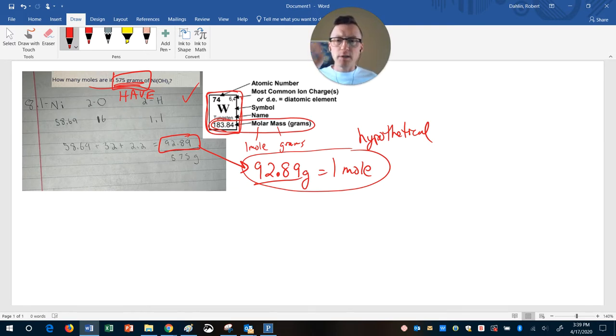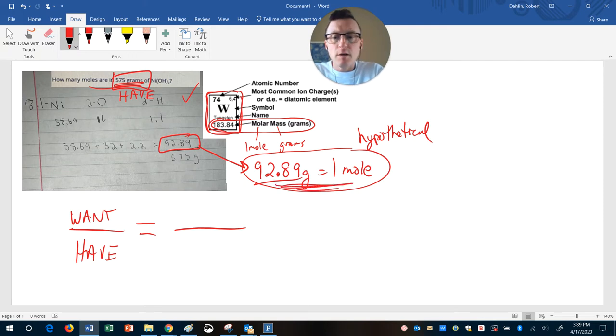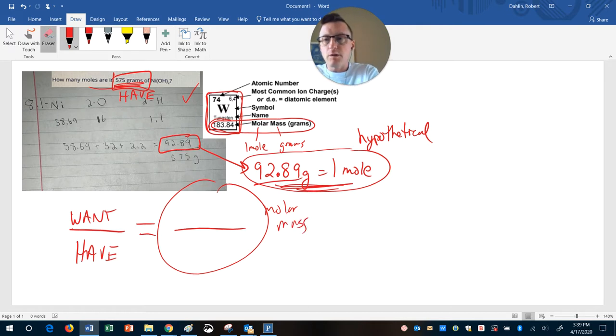Now, a couple of ways you could do this. We could set this up as a proportion where we say, okay, what does the question want me to have or want me to solve for? What do I have? And then the other side of the fraction or the equal sign comes from your molar mass here. So this is all molar mass stuff. So the question says, well, what do you want? How many moles?